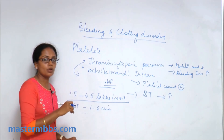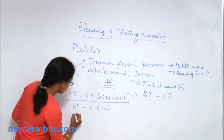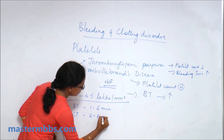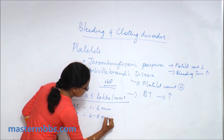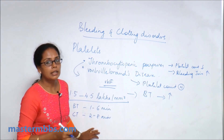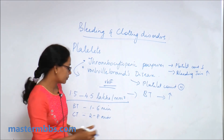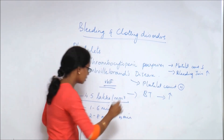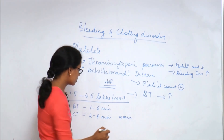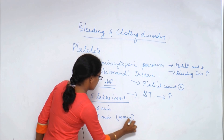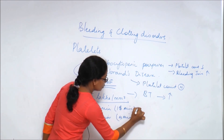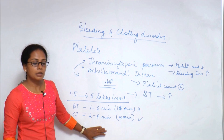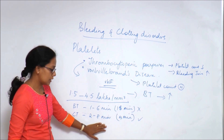In this case they have also given the clotting time. The normal clotting time is 2 to 8 minutes. Here the clotting time is 4 minutes, which means the clotting time is normal. So we have: bleeding time of 15 minutes — abnormal; clotting time of 4 minutes — normal.